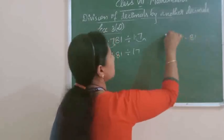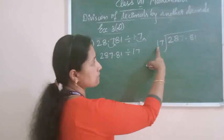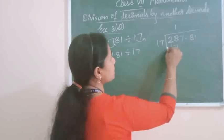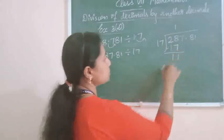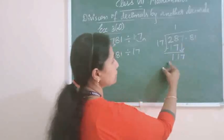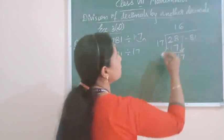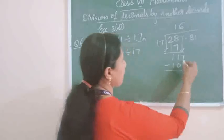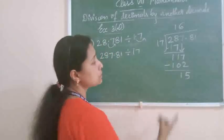287.81 divided by 17. The number 2 is smaller than 17, so you have to take 28 together. 28 divided by 17 — 1 times 17 is 17. Subtraction: 8 minus 7 is 1, and 2 minus 1 is 1, so you got remainder 11. Now take the next digit, which is 7. This number is now 117. 117 divided by 17 — 17 sixes are 102. We write 102 here. Subtraction: 7 minus 2 is 5, and 1 minus 0 is 1. You got the remainder 15.